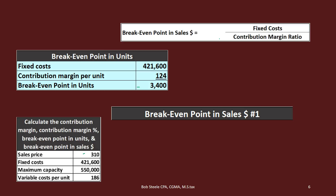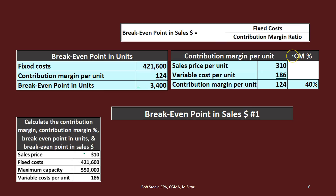The break-even point in sales dollars equals fixed cost divided by the contribution margin ratio. The contribution margin ratio is the sales price per unit minus the variable cost per unit giving the contribution margin per unit, then divided by the sales price per unit — that gives us 40%. That's the contribution margin percent or contribution margin ratio. Whether we use per unit numbers or total numbers — total sales minus total variable costs divided by total revenue — we get the same 40% ratio, due to the proportional behavior of variable costs relative to sales.